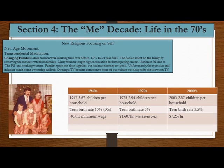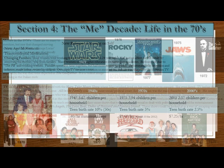Looking at the decade and the people in it: more women were working than ever before — 60% of 16- to 24-year-olds. This had an effect on the family by removing the mother or wife from the home. Many women sought higher education for better-paying careers. The birth rate fell due to the birth control pill and working women. Families spent less time together but had more money to spend. Unfortunately, recession and inflation made home ownership difficult. Owning a TV became common, so more of our culture was shaped by the TV shows we watched.